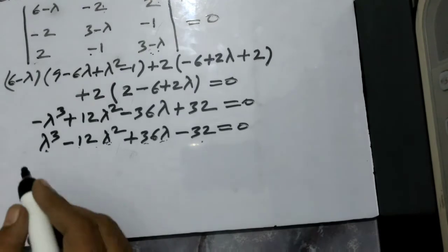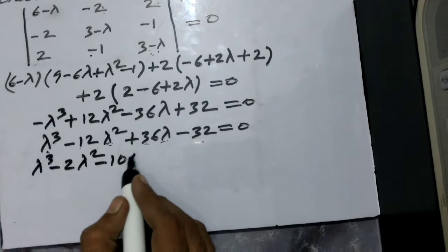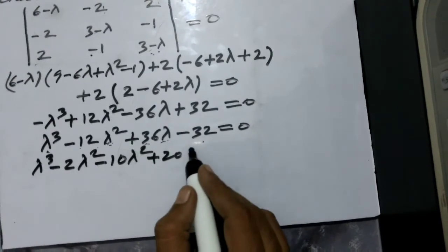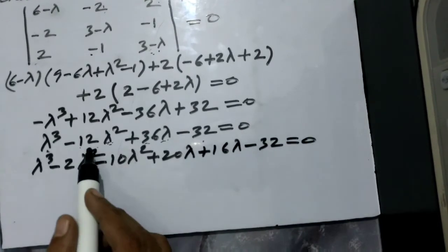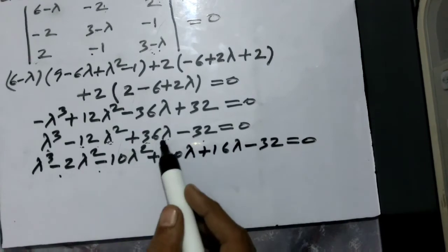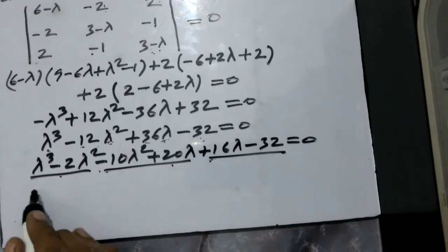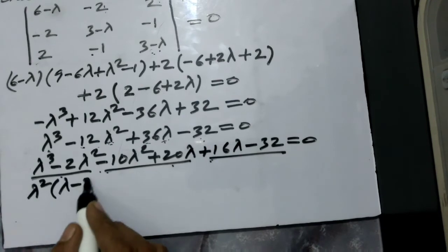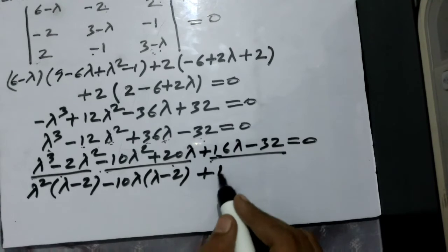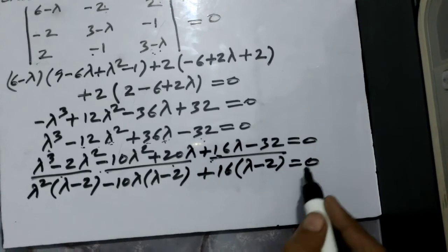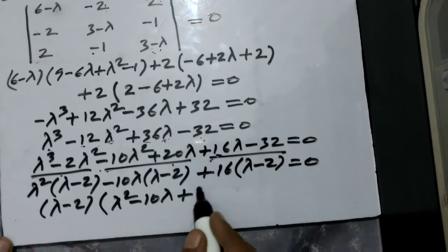Keeping lambda equals 2 in mind, we factorize: lambda cubed minus 12 lambda squared plus 36 lambda minus 32 is rewritten by splitting as lambda squared(lambda minus 2) minus 10 lambda(lambda minus 2) plus 16(lambda minus 2) equals zero. Taking (lambda minus 2) as common, we are left with (lambda minus 2)(lambda squared minus 10 lambda plus 16) equals zero.